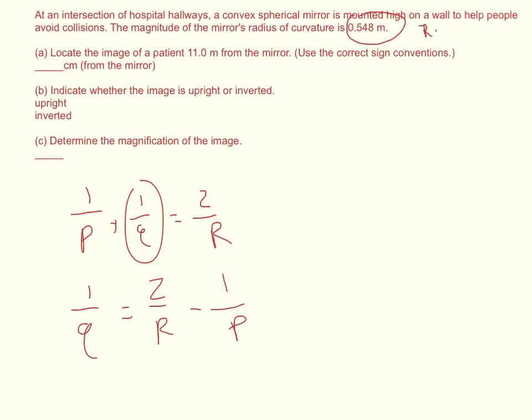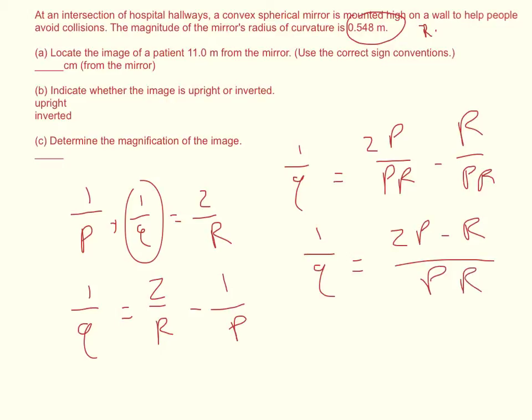Then we find a common denominator. So we get 1 over Q equals 2P over PR minus R over PR. We take the inverse of that, so Q equals P times R over 2P minus R. That gives us the answer to the first part.